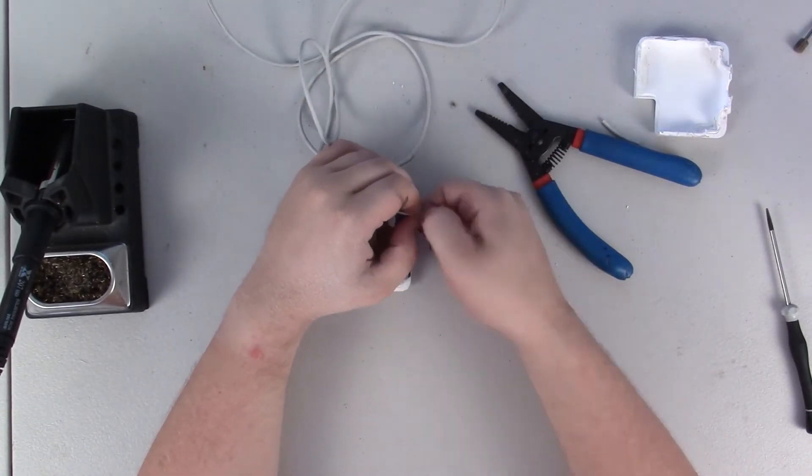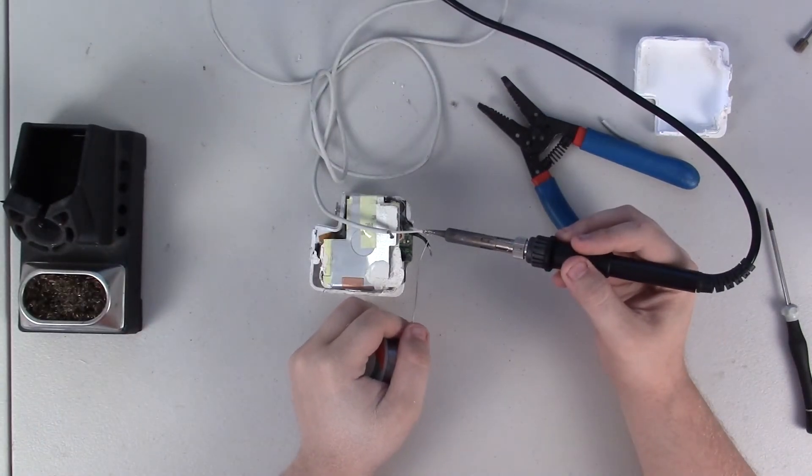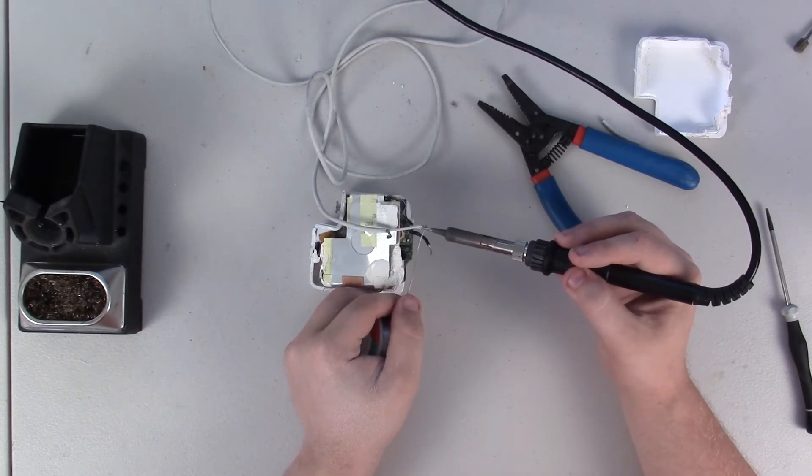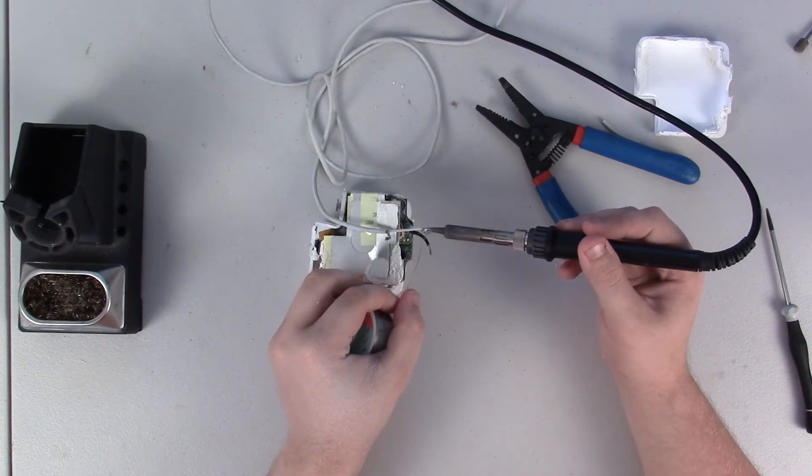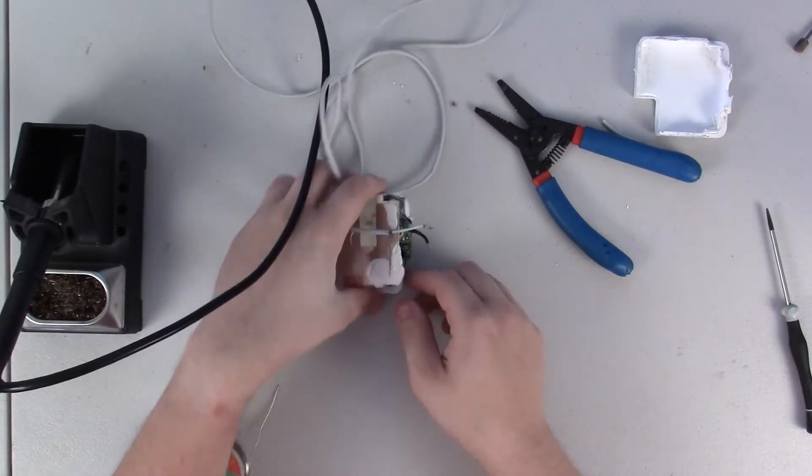You solder the center wire in the cable to the white wire, and the shield, the exterior cable, goes to ground. So all you really have to do is just solder those two connections together, and that's about it, at least in terms of repair.